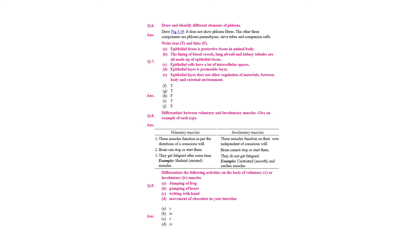Epithelial cells have a lot of intercellular spaces — false. Epithelial layer is permeable — true. Epithelial layers do not allow regulation of material — false. So answers: A — true, B — true, C — false, D — true, E — false.